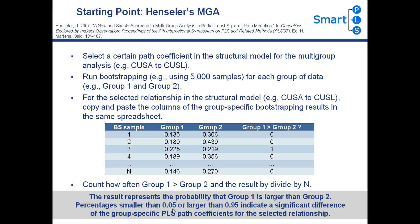While low percentages of 0.05 indicate a significant outcome, we could also obtain very large percentages. In that case, we have a lot of 1 values in column 4, indicating that Group 1 results are often larger than Group 2 results. If this percentage is 0.95 or higher, this also indicates a significant difference of the group-specific PLS path coefficients. In summary, values of 0.05 and smaller, as well as values of 0.95 and larger, both indicate a significant difference for the selected relationship.